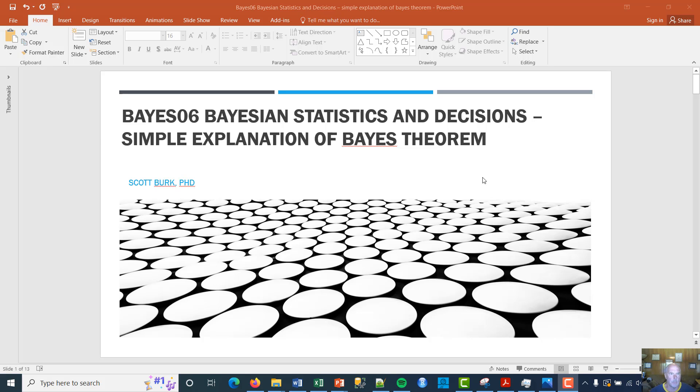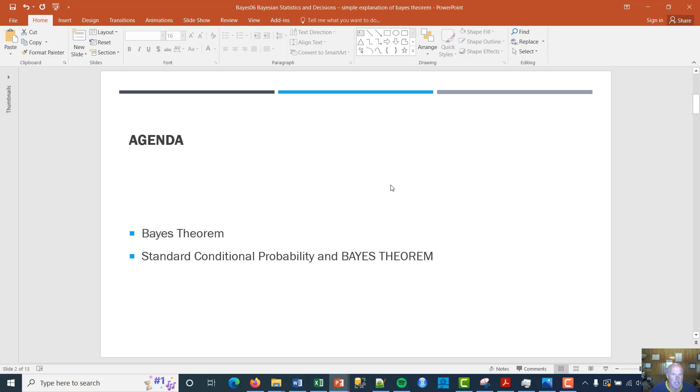This is Bay Zero Six. I hope you joined me with Bay Zero Zero, where I went through the outline, my plan for the series. So essentially, now we're looking at, we've gone through five. We're now going through a simple explanation of Bayes' theorem. And so I try to keep an agenda. This is going to be really simple.